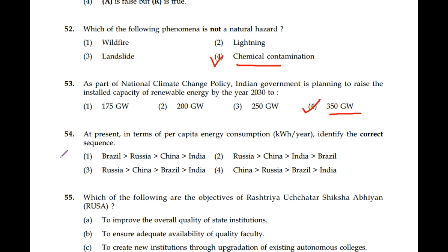Question number 54: At present, in terms of per capita energy consumption in kilowatt hours per year, identify the correct sequence among BRICS countries. South Africa is not included here. The correct sequence is Russia, China, Brazil, India. Option 3 is the correct answer. If South Africa were included, it would come between Russia and China.